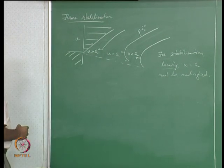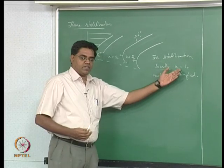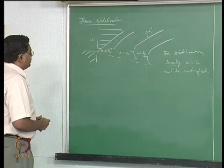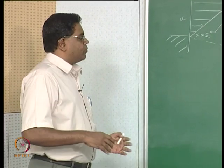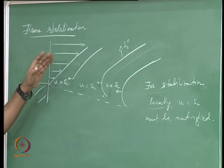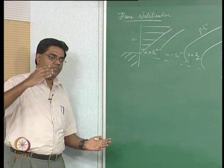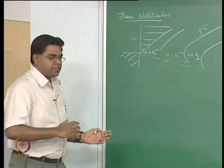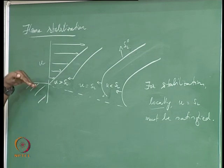The flame stabilization condition requires local SL to match local U. Two situations arise when this cannot be satisfied. First, if you progressively decrease flow velocity, or increase reactivity by changing mixture stoichiometry toward stoichiometric, the flame speed increases relative to flow velocity. The flame then tends to establish itself closer to the burner, and ultimately cannot be held at the burner rim — that is flashback.